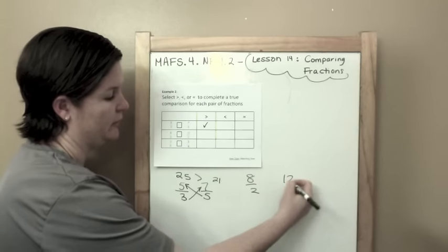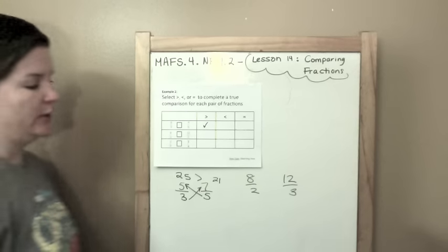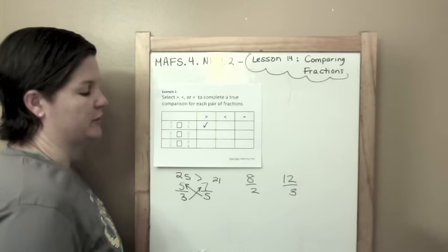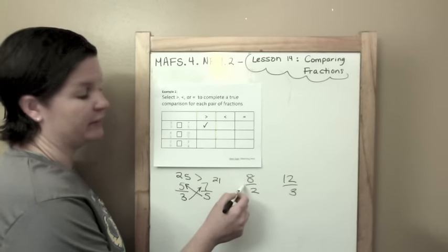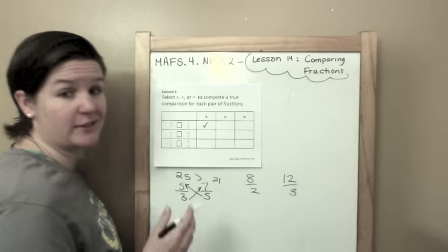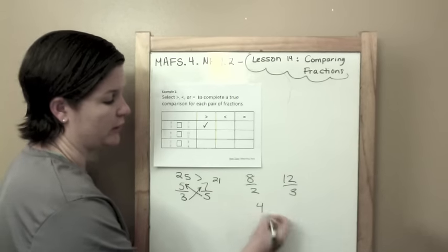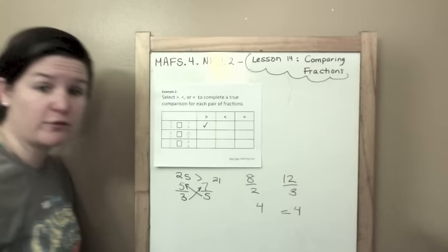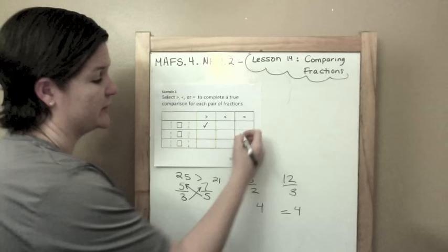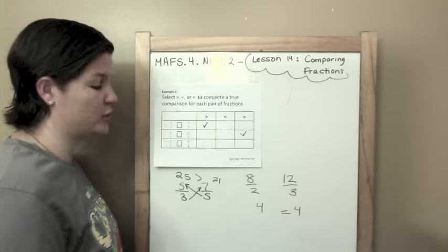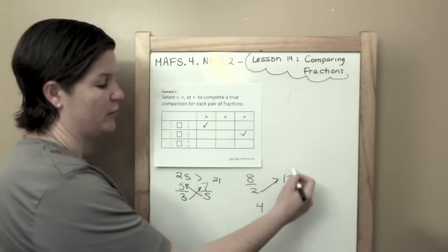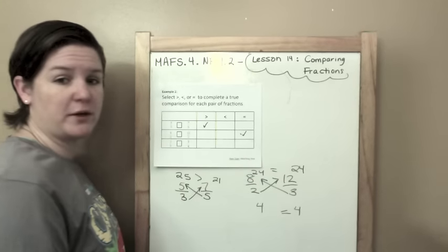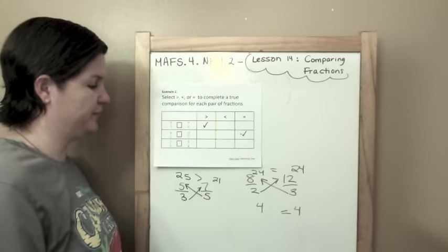8 halves, 12 thirds. You can do this this way. I'm going to show you a different way first, and then we'll go back to that math trick. 8 divided by 2. The fraction bar also says divided by. 8 divided by 2 is 4. 12 divided by 3 is 4. And 4 and 4 is equal to 4. So I know that I'm going to check the equal box, but let me prove it using the arrow trick. 2 times 12 is 24. 3 times 8 is 24. 24 is equal to 24.